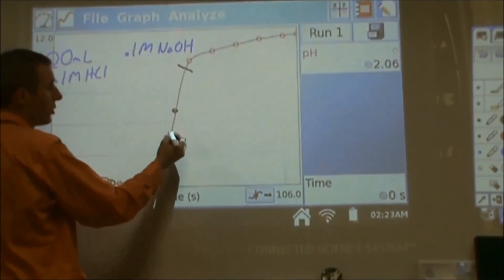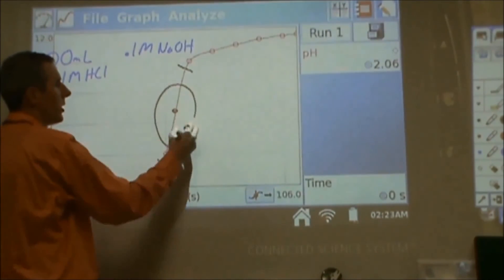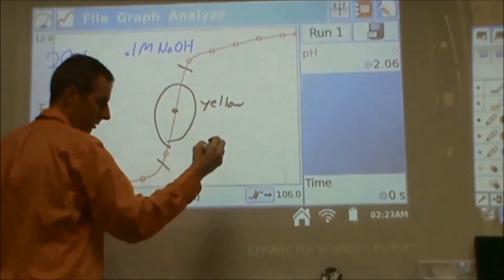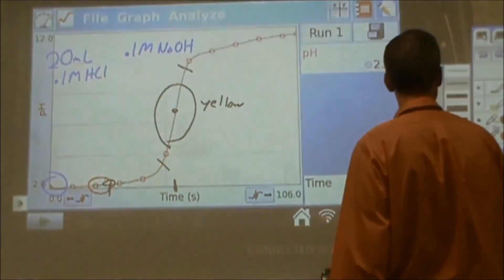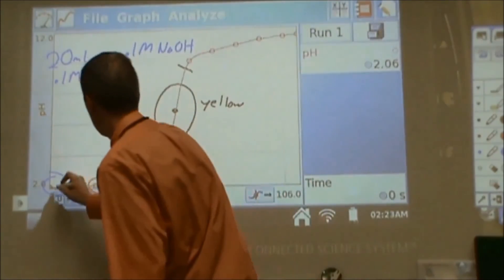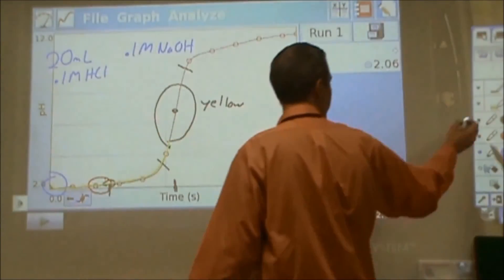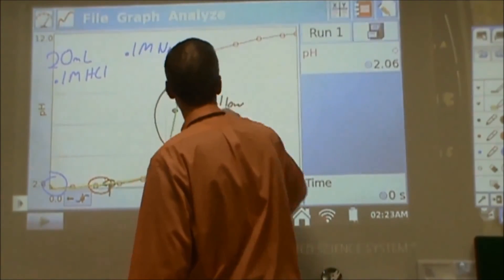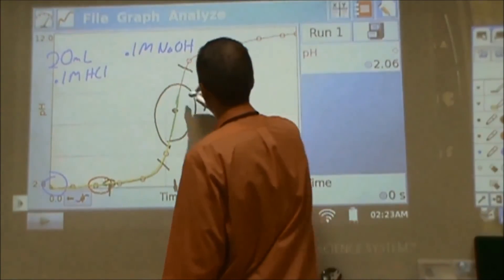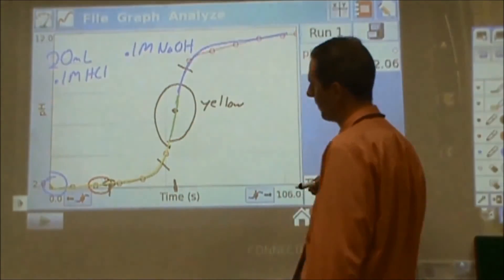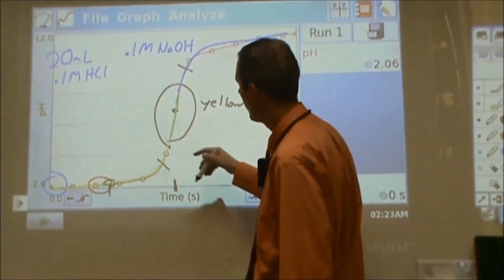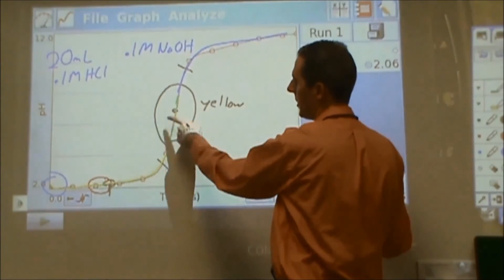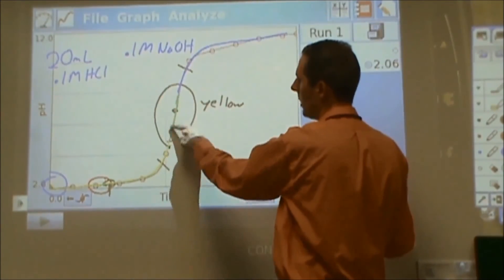Now, the color change we saw happening somewhere in this range here, where we went from yellow. Let's actually do that in yellow, right? This was yellow up until this point. Then all of a sudden it changes to green for a little bit, and then it goes full circle all the way back to blue. The color change is occurring over a very small time frame. A couple drops of acid and base is the difference between yellow and blue.